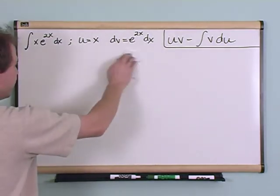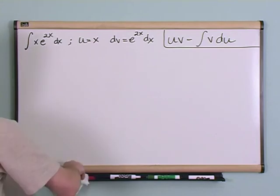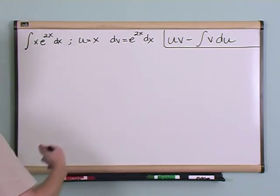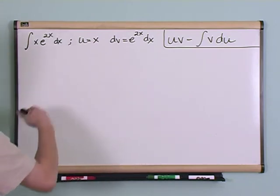But I just wanted to tell you why we picked u and dv the way we did. I'm not going to explain any more theory. We're just going to go on and work the problem.